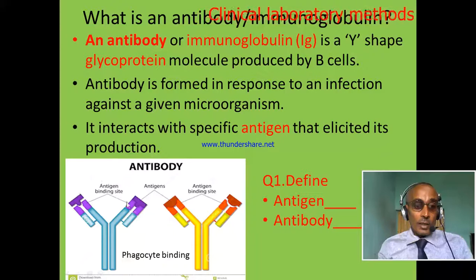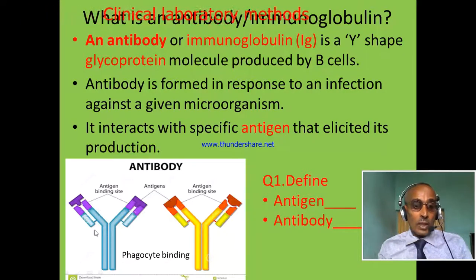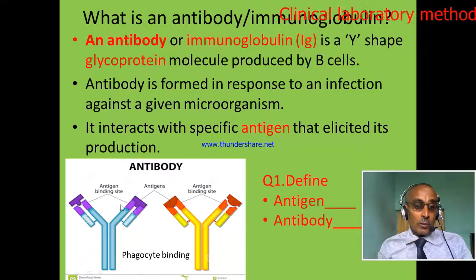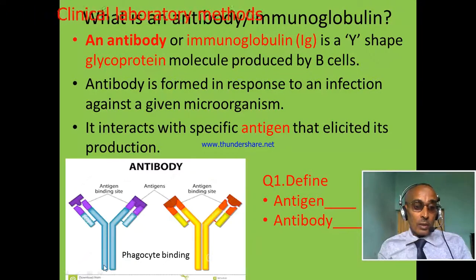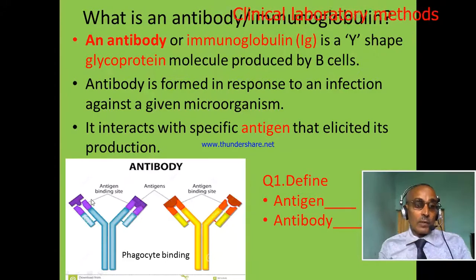Here we have an antigen-antibody interaction model. This is an antigen, and this one is an antibody. When an antigen enters our body, our body synthesizes a specific antibody that fits exactly with the antigen. These two parts are the antigen binding sites of the antibody, and this one is the phagocyte binding site of the antibody. When phagocytes bind this part of the antibody, they can engulf or bind the antigen.